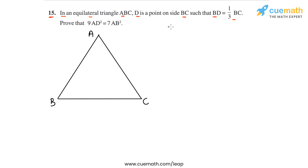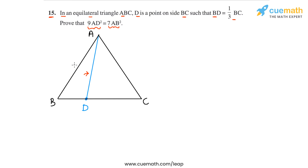D is a point on BC such that BD is one-third of BC, so D will be closer to B than it is to C. We join A to D to get segment AD. We have to prove that 9 times AD² equals 7 times AB². AD is this segment and AB is this side of the triangle.